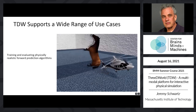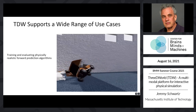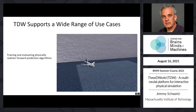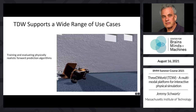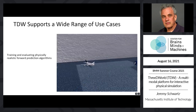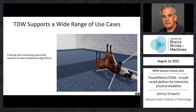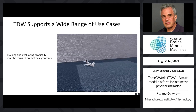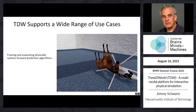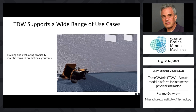Here we see an example of TDW being used for the training and evaluation of physically realistic forward prediction algorithms. As human beings, we learn at a very early age that the results of objects coming into contact with each other affects how we interact with them. For agents to learn this, they must understand how momentum and geometry affects collisions. In this clip, randomly selected toys are created with random physics material values. A force of randomized magnitude is applied to one toy aimed at another. This is one of over a dozen physics behavior scenarios in our physics benchmark dataset.